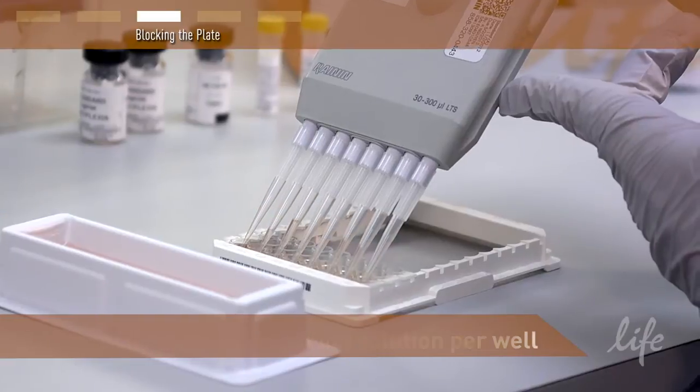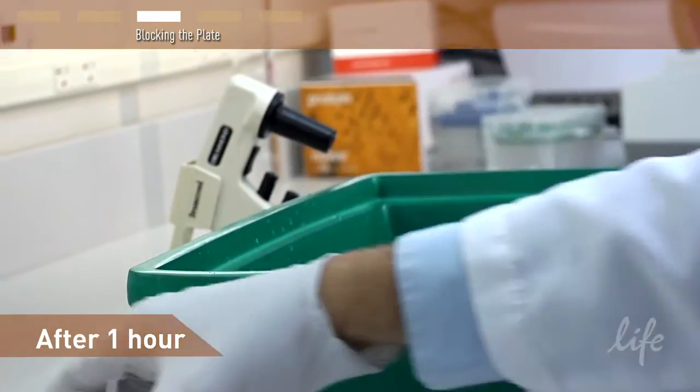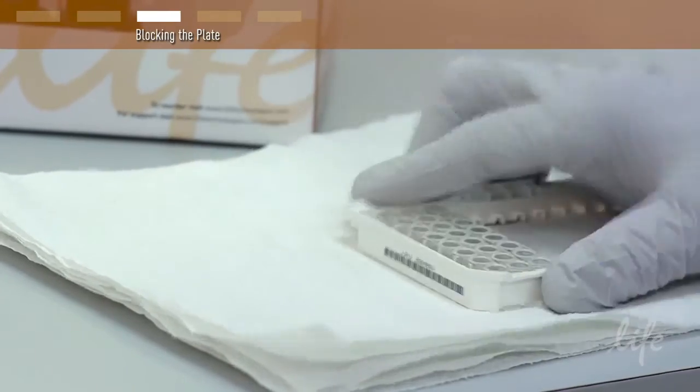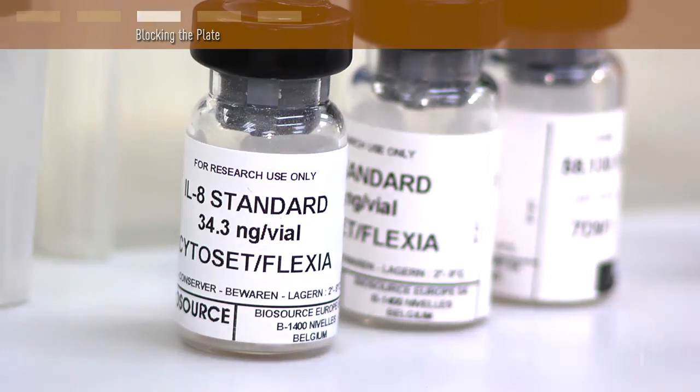After one hour, decant or aspirate the liquid from the plate and remove excess liquid by blotting against absorbent paper. Be careful not to scrape the bottom of the plate with the aspiration needles from the automated plate washer. With the plate ready, we can proceed with standard curve and sample preparation.